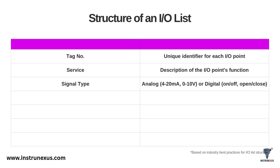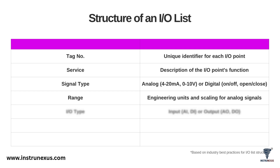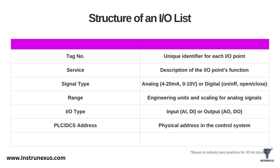Signal type is critical – is it an analog signal like 4-20 milliamps, or a digital signal like an on-off contact? Range, for analog signals, defines the engineering units, like 0-100 PSI. IO type classifies the point as an input (DI or AI) or an output (AO or DO). PLC/DCS address is the specific physical address in the control system – the exact channel, card, and rack where the signal will be wired. Remarks is a catch-all for any special requirements or notes.